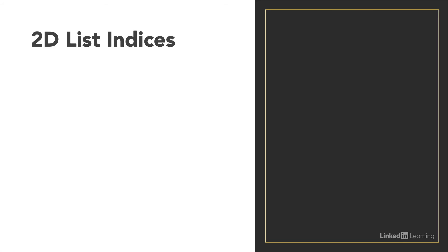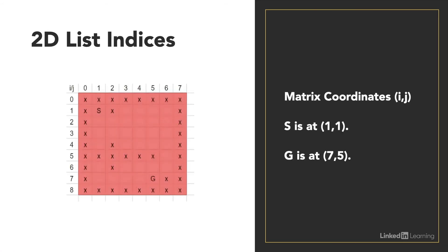So for a bit more practice on that, we have here a grid representation of a maze, where the X's are the cells that we can't access, or the obstacles. S would be the start position and G would be the goal position. So you can see that S is at position (1,1), which means row 1, column 1. Whereas G is at position (7,5), which means row 7, column 5.